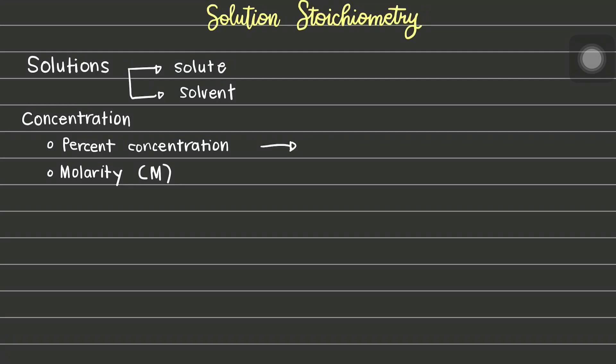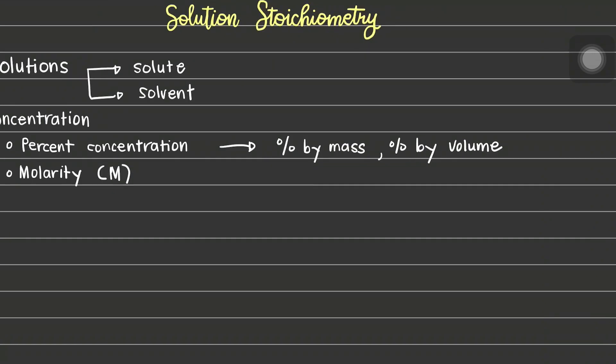Percent concentration may be indicated in three different ways: percent by mass or mass-mass percent, percent by volume or volume-volume percent, and mass-volume percent.